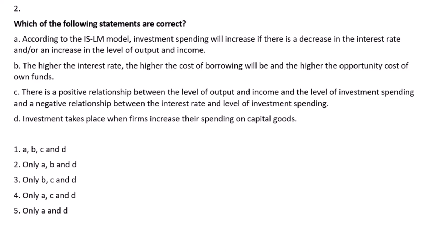According to the IS-LM model, investment spending will increase if there's a decrease in the interest rate and/or an increase in the level of income and output. If interest rates drop, investment spending increases. If the level of income and output increases, investment spending also increases. So statement A is correct.